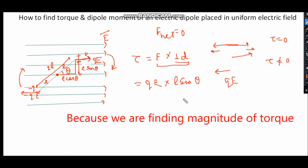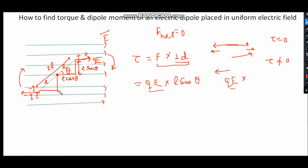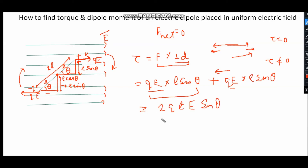We will consider only the magnitude of the forces. The other force is also qE, and the other perpendicular distance is again L sin theta, because if the angle is theta then the component is L cos theta and the vertical component is L sin theta. So for the second force also the perpendicular distance is L sin theta. We add these two torque components, and we can write 2qL as P, where P is the dipole moment — the product of the charge and the dipole length.